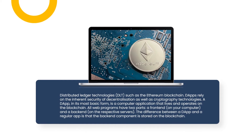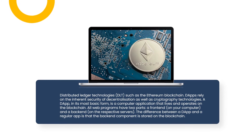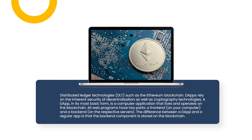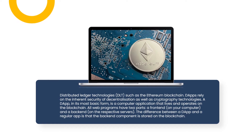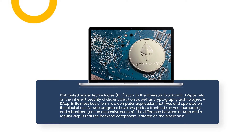Distributed ledger technologies (DLT), such as the Ethereum blockchain, are what D-Apps rely on for the inherent security of decentralization as well as cryptography technologies. A D-App in its most basic form is a computer application that lives and operates on the blockchain. All web programs have two parts: a front end on your computer and a back end on the respective servers. The difference between a D-App and a regular app is that the back-end component is stored on the blockchain.